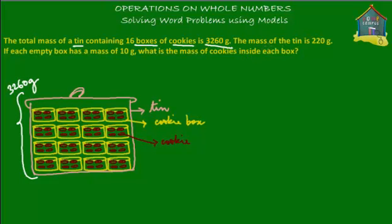The mass of the tin itself is 220 grams — just the pink tin here is 220 grams. Each empty box has a mass of 10 grams — so without the cookies, the empty cookie box has a mass of 10 grams. And what we are asked to find out is the mass of cookies inside each box — the brown cookies inside each yellow box. That we don't know.